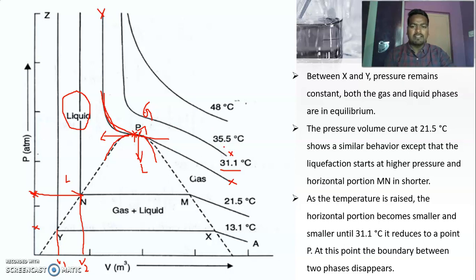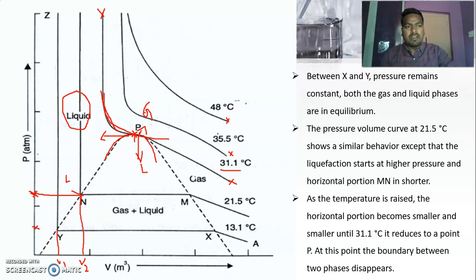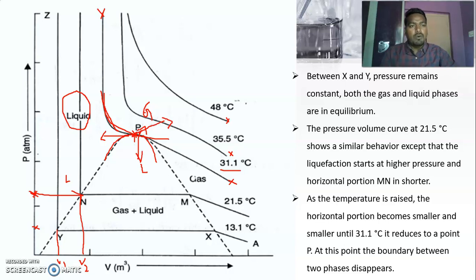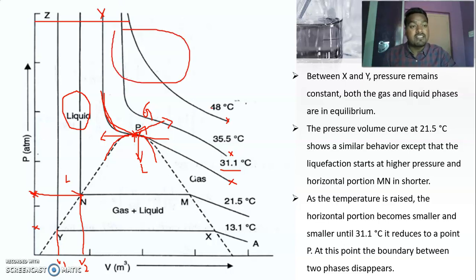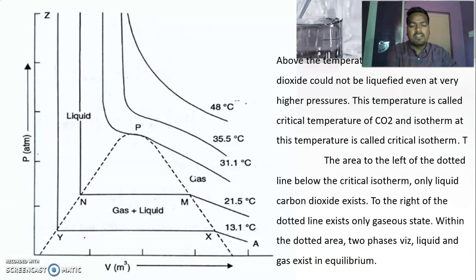At 35.5°C and 48°C, at all temperatures and pressures the CO₂ exists as a gas and cannot be liquefied. That means at one particular temperature you can condense it into liquid, but at 48°C even if you apply high pressure, it does not convert into liquid. The temperature at which gaseous carbon dioxide can just be converted into liquid is called the critical temperature. Above the critical temperature, the gas does not liquefy even if you apply pressure.